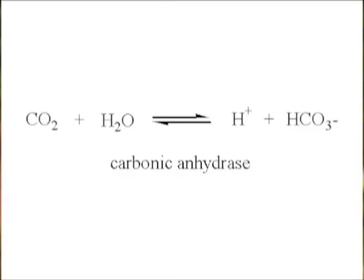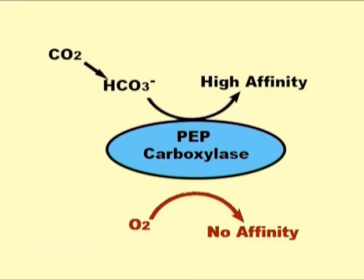Even at low CO2 concentrations, PEP carboxylase can more efficiently trap carbon dioxide in the form of bicarbonate. The bicarbonate is formed from the reaction of carbon dioxide and water by the action of the enzyme carbonic anhydrase. Since the substrate for PEP carboxylase is bicarbonate and not carbon dioxide, O2 is a very poor substrate, and the enzyme does not have any oxygenation activity.